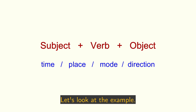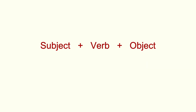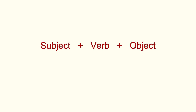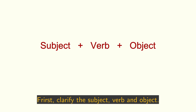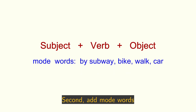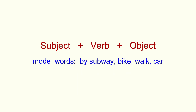Describe in Chinese how you go to work. First, clarify the subject, verb, and object. Second, add the mode words: by subway, by bike, by walk, or by car.